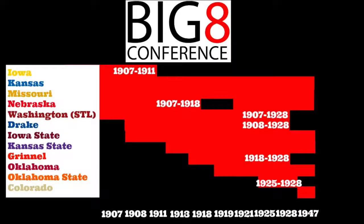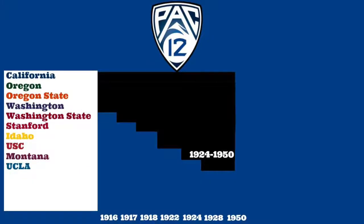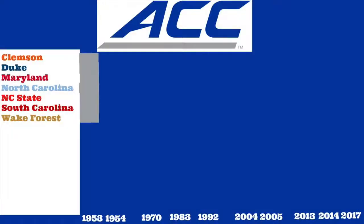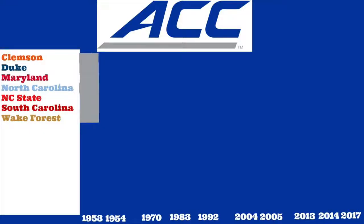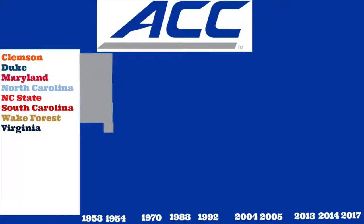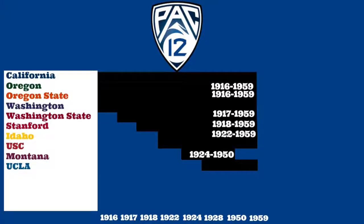In 1947, Colorado joined the Big Six from the Mountain States Conference, making it the Big Seven. In 1950, Montana left the Pacific Coast to go to the Mountain States Conference. In 1953, the ACC was formed when seven teams left the SOCON: Clemson, Duke, Maryland, North Carolina, NC State, South Carolina, and Wake Forest. Michigan State also joined the Big Nine, and it finally became the Big Ten again. In 1954, Virginia joined the ACC. In 1959, the PCC disbanded following a pay-for-play scandal at Cal, UCLA, USC, and Washington. Those four schools went on to form the Athletic Association of Western Universities. A month later, Stanford joined and they were colloquially called the Big Five.